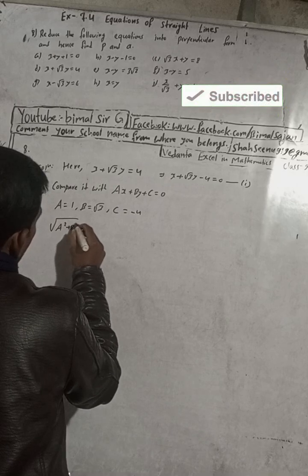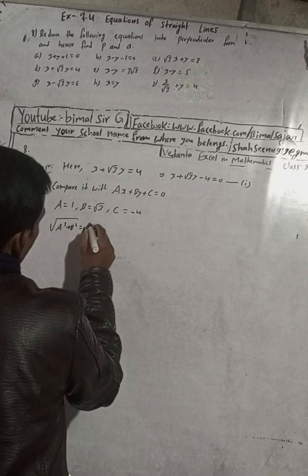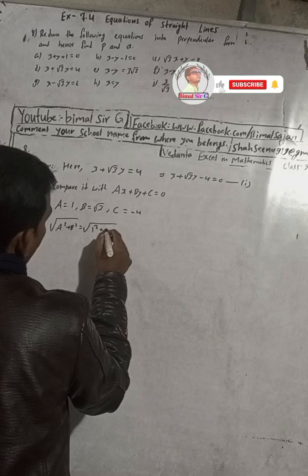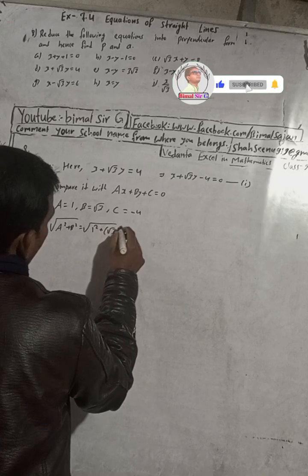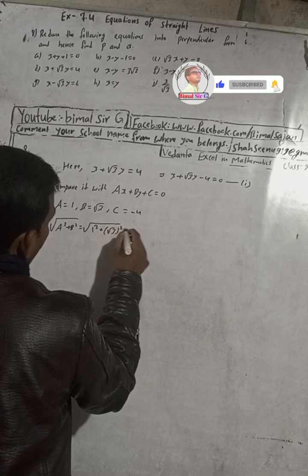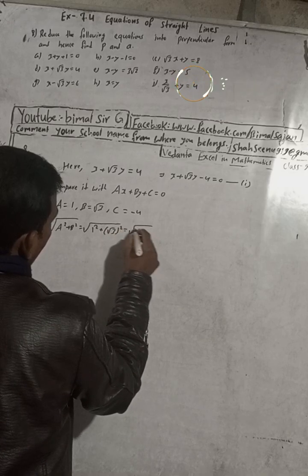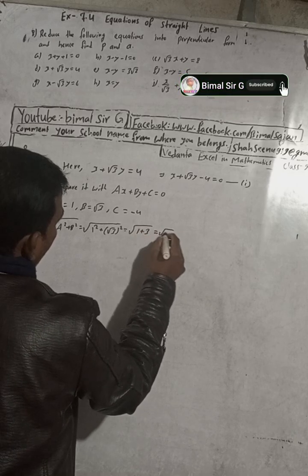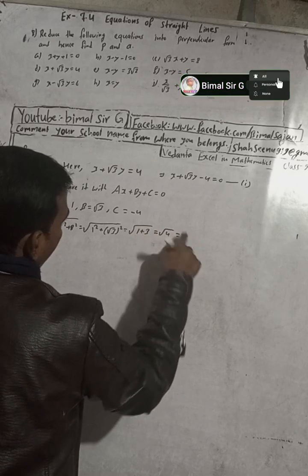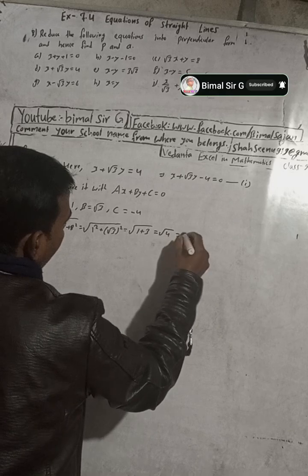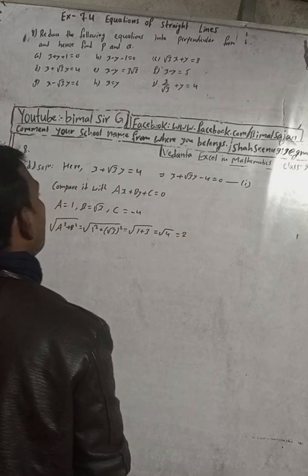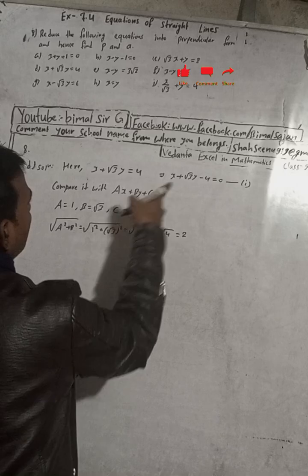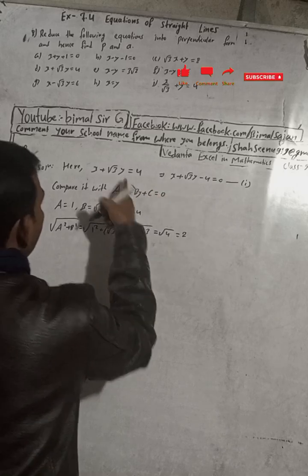Now find √(a² + b²). So a² = 1² = 1 and b² = (√3)² = 3. This gives √(1 + 3) = √4 = 2.